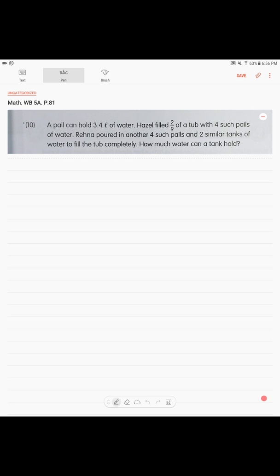Okay. Again, this is a remainder concept with parts and wholes. So, there is a tub, and there is a total water. How much it can hold? So, we know that 2/9 of a tub can be filled with 4 pails. And that's what we do. We draw our 9 units.